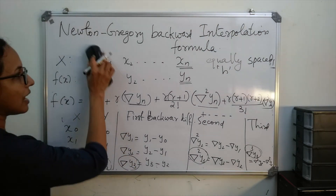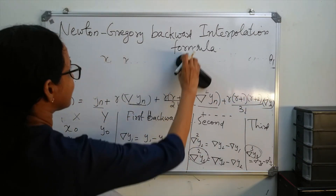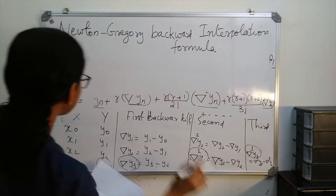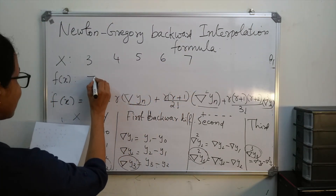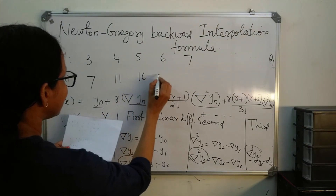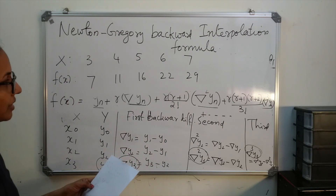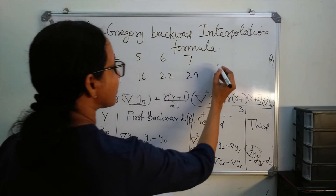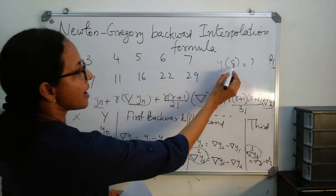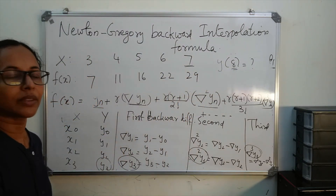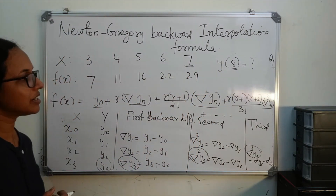Now I will explain this with an example. Suppose the given data has x values 3, 4, 5, 6, 7 and y values 7, 11, 16, 22, and 29. We have to find the value y(8). Since 8 is near to the last value in the table, it is close to xn, so we use the backward interpolation formula.